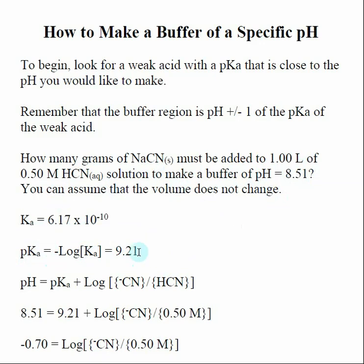So if this is my pKa, then sodium cyanide and the weak acid HCN will make a good buffer between 8.21 and 10.21 pH. So this pH falls within that range.